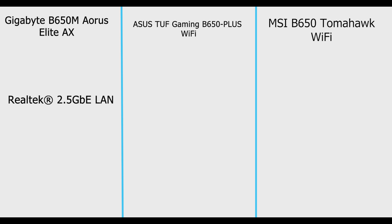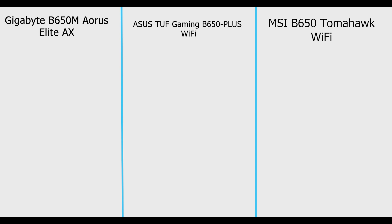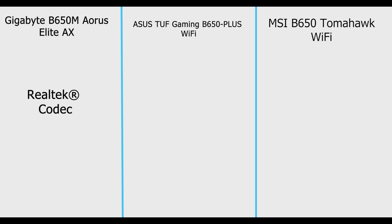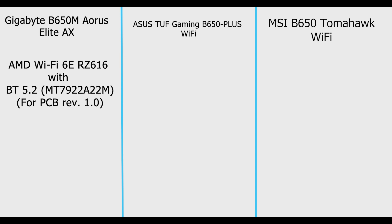For LAN, Gigabyte has a Realtek 2.5 Gigabit Ethernet port, exact model unknown. ASUS also has a Realtek 2.5 Gigabit Ethernet port, exact model unknown. MSI has a Realtek RTL8125B 2.5 Gbps LAN port. For audio, Gigabyte is equipped with a Realtek audio codec (exact model not mentioned) and supports S/PDIF output. ASUS also has a Realtek HD audio codec, exact model unknown. MSI is equipped with the Realtek ALC4080 codec and supports S/PDIF output.